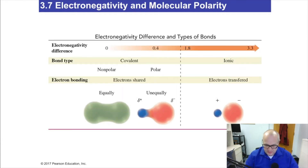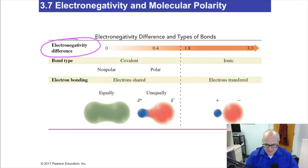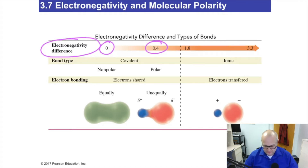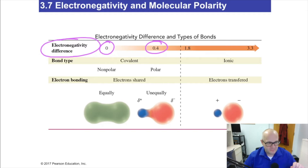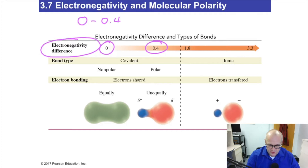Here are some numbers to write down. The electronegativity difference — we're going to do some subtracting. If the difference in electronegativity is zero, that bond is nonpolar covalent. As the difference becomes greater, around 0.4, those bonds are on the fence. Between 0 and 0.4, you are nonpolar covalent.